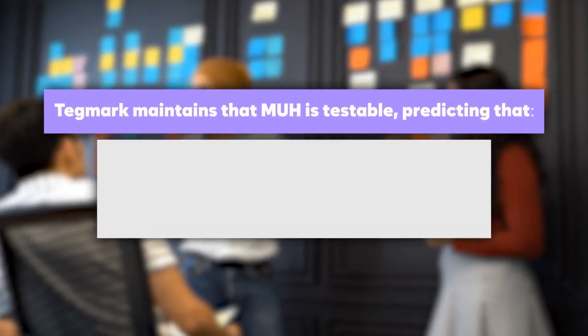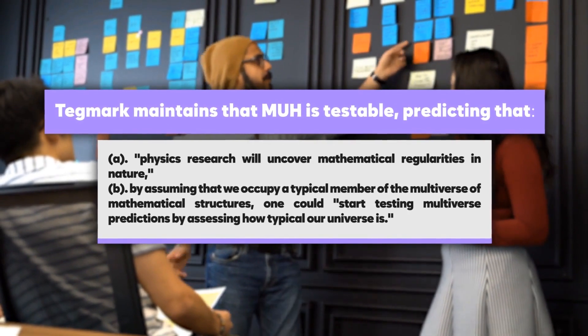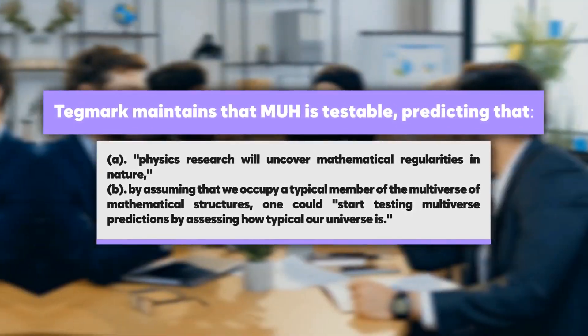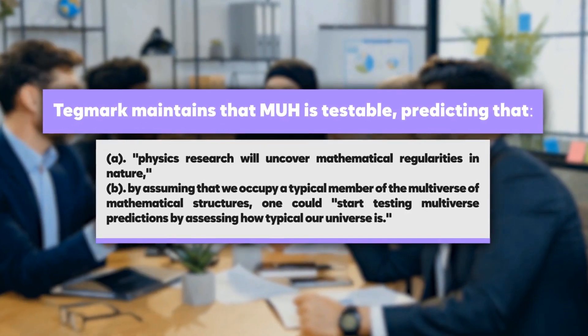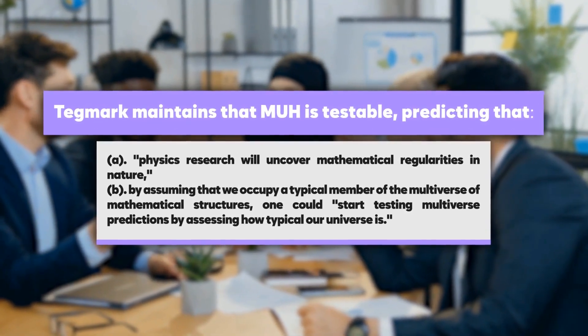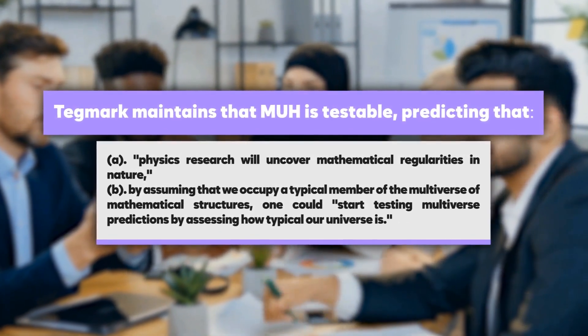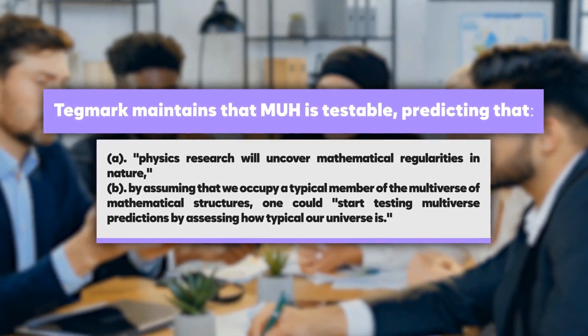Tegmark maintains that MUH is testable, predicting that A, physics research will uncover mathematical regularities in nature. B, by assuming that we occupy a typical member of the multiverse of mathematical structures, one could start testing multiverse predictions by assessing how typical our universe is.